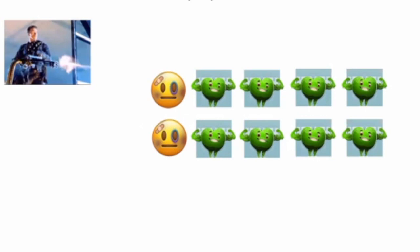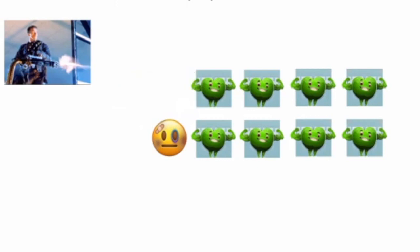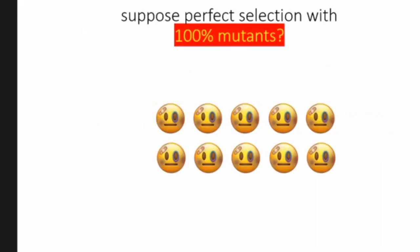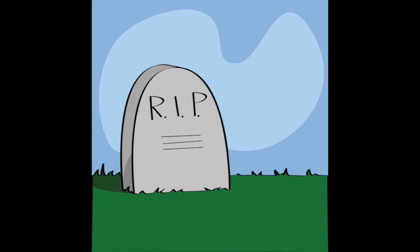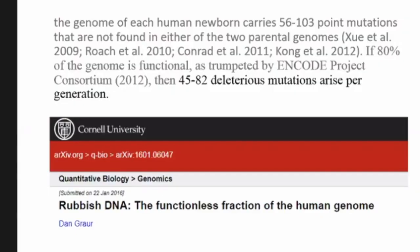Each generation passes on a certain amount of new mutations that selection cannot see. Selection can only remove the worst and most detrimental mutations, or else it would select away healthy cells that might have slight mutations in them. Obviously, that can't happen. So what does happen? Well, in 2016, Dan Grauer noticed and stated that each newborn carries 53 to 103 point mutations that are not found in either of the two parental genomes.